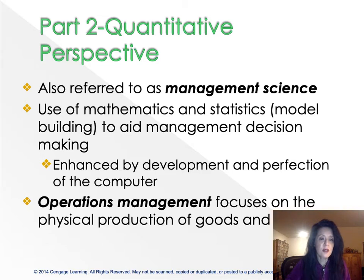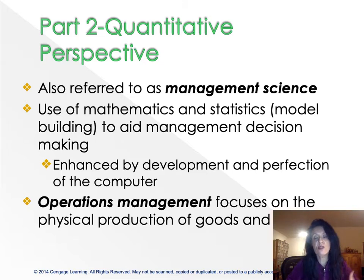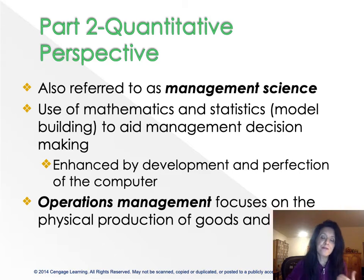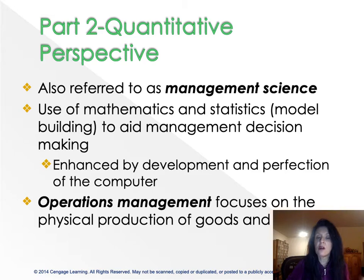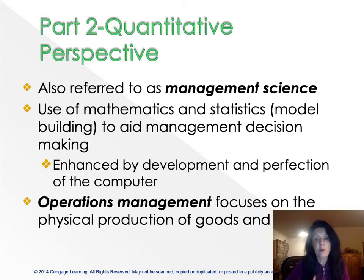The difference between operations research and operations management is that operations research is more about collecting data, doing analysis, and analyzing statistical outcomes, whereas operations management is more about managing and controlling the actual production of goods and services.